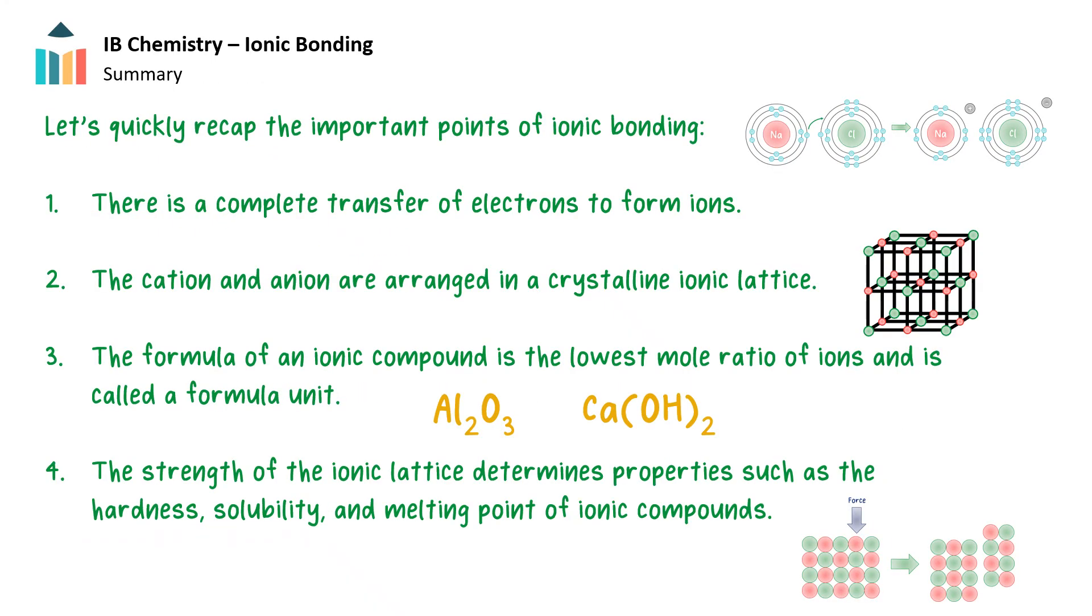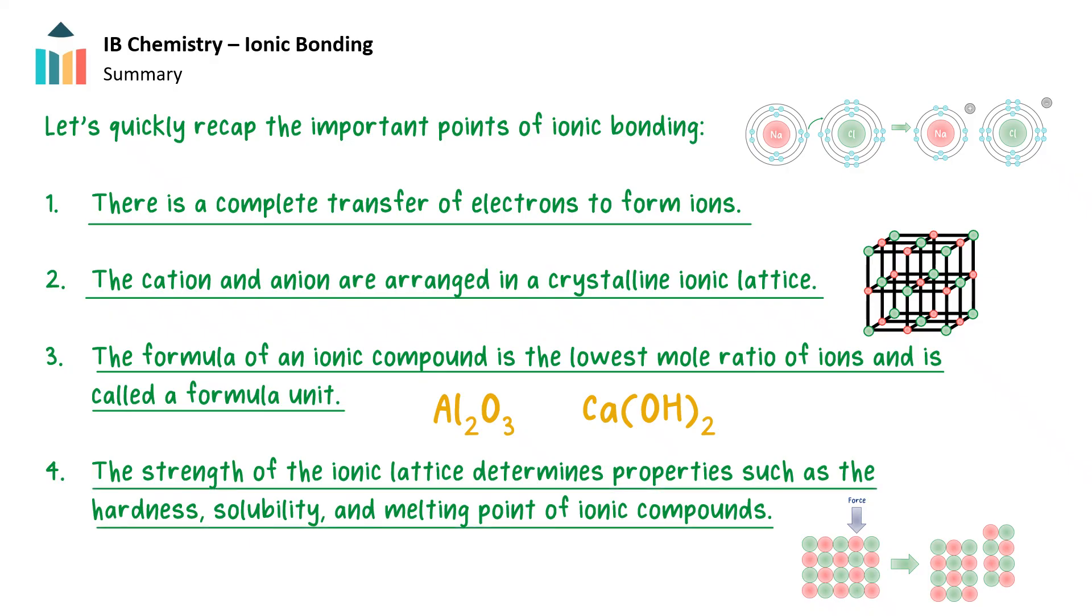Let's quickly recap the important points of ionic bonding. 1. There is a complete transfer of electrons to form ions. 2. The cation and anion are arranged in a crystalline ionic lattice. 3. The formula of an ionic compound is the lowest mole ratio of ions and is called a formula unit. And 4. The strength of the ionic lattice determines properties such as the hardness, solubility, and melting point of ionic compounds.